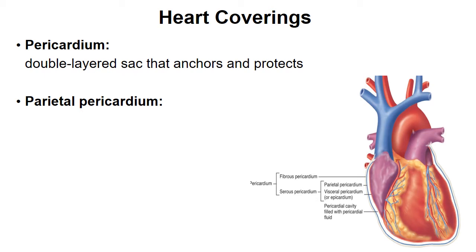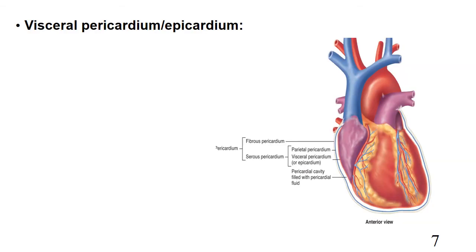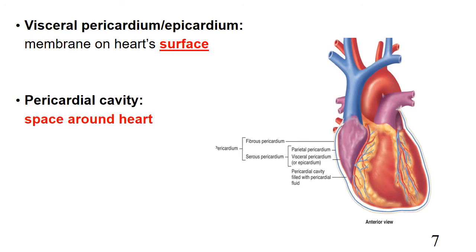These are also two terms we saw in chapter one. Parietal pericardium is the membrane around the heart's cavity — a cavity is a space. The visceral pericardium is on the surface of the heart. So the pericardium itself is the bigger structure, which contains two smaller membranes: parietal and visceral. Another term for visceral pericardium is epicardium. The pericardial cavity is the space around the heart, often filled with fluid. It is important that this fluid not contain any bacteria or viruses, otherwise an infection could occur.